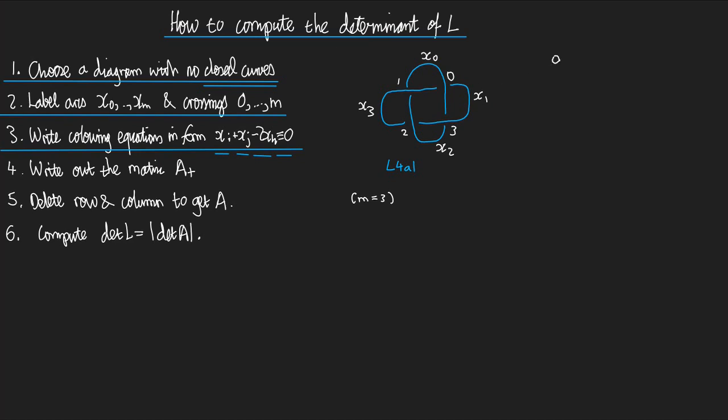So we'll have 0, 1, 2, 3. And what is the colouring equation at crossing 0? It's X1 plus X3 minus 2X0 congruent to 0.